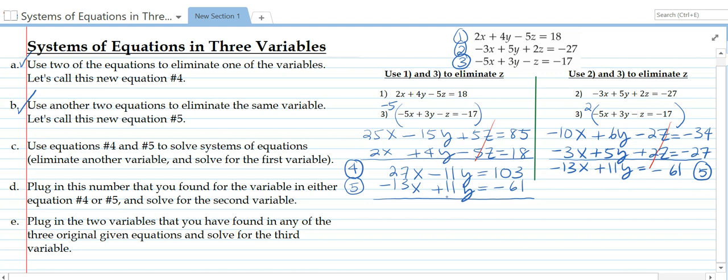If this was not the case, then we would have to multiply one or both of the equations by a number so that the coefficients would be the same and we could cancel them. But in this case they are already cancelable. So we get 14x equals 42. Divide both sides by 14. We get x equals 3. We're done with step C.